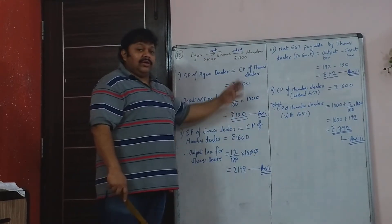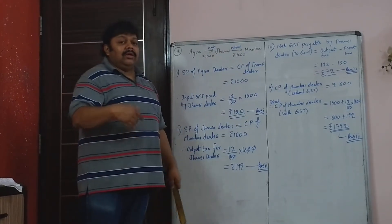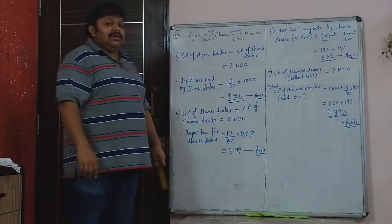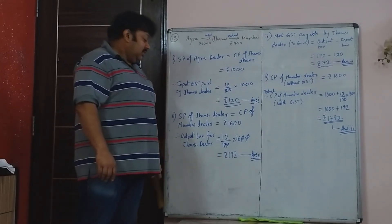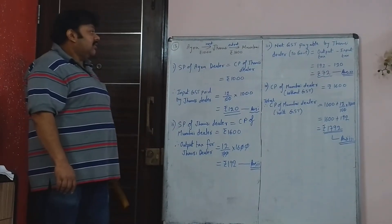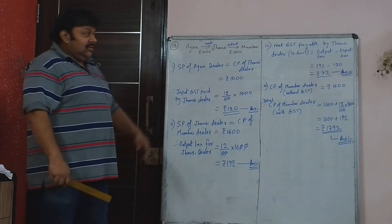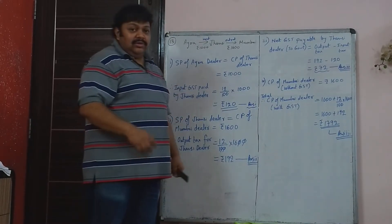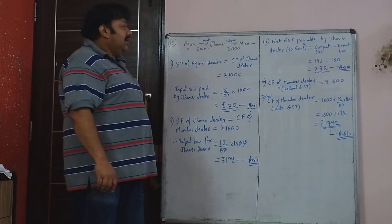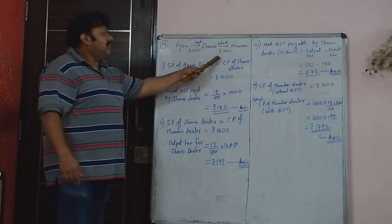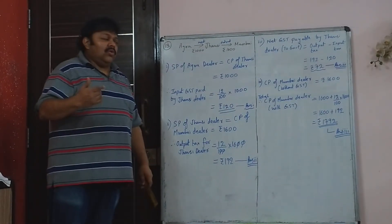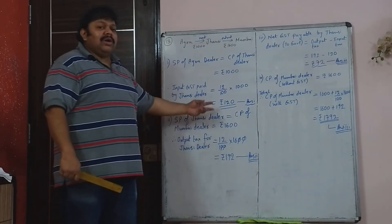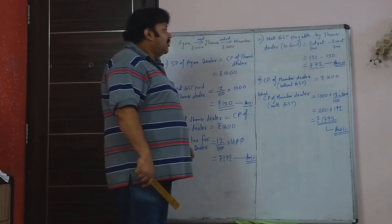The output of Jasi dealer is Rs. 1,600. When he sells to the Mumbai dealer, he charges Rs. 1,600 plus 12% GST. So the output tax for Jasi dealer is 12% of Rs. 1,600, that is Rs. 192. The net GST paid by Jasi dealer to government is output tax minus input tax: Rs. 192 minus Rs. 120 equals Rs. 72. This could also be calculated as 12% of his profit Rs. 600, which gives the same Rs. 72.